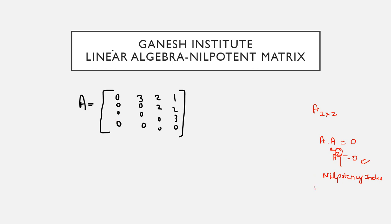So let's say this example: 0, 3, 2, 1 and 0, 0, 0, 3, 0, 0, 2, 2, 0, 0, 1, 2, and the last row all 0s. So you have to find out where this nilpotency index can come. So if you multiply this with itself, what will you get?